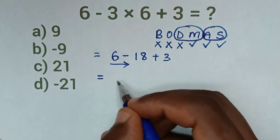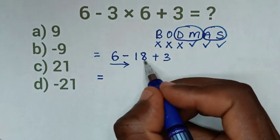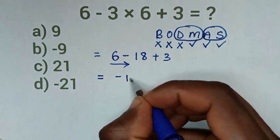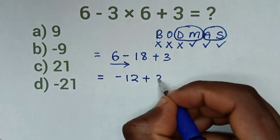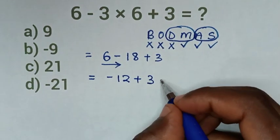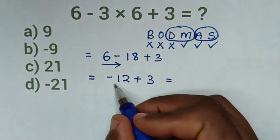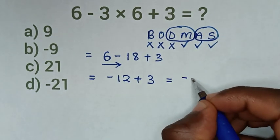So it will be equal to 6 minus 18 is negative 12, then plus 3. So it will be equal to negative 12 plus 3 is negative 9.